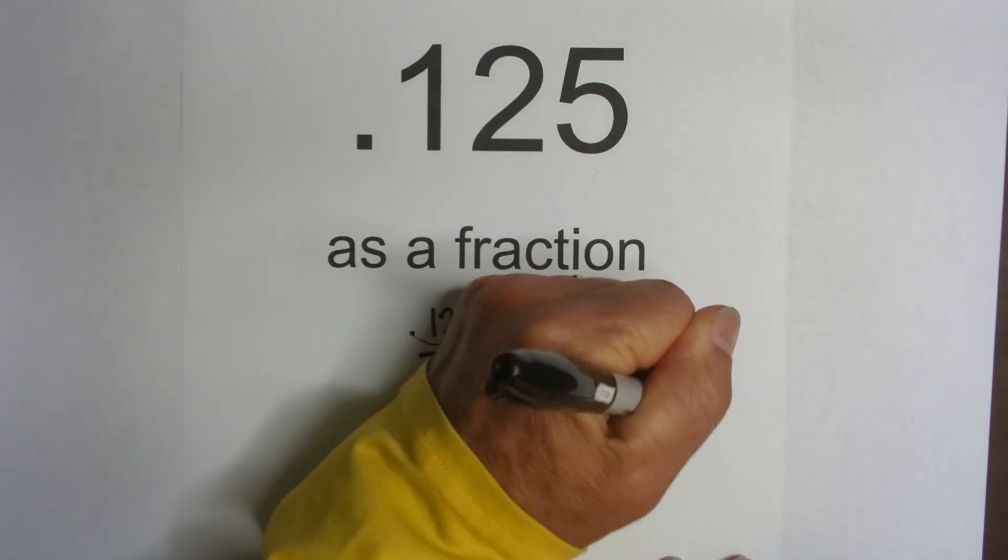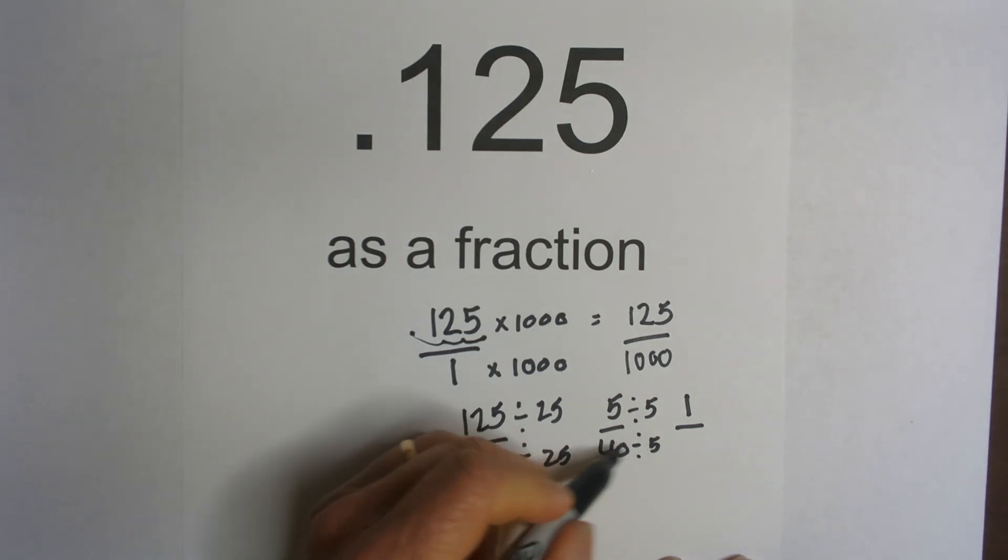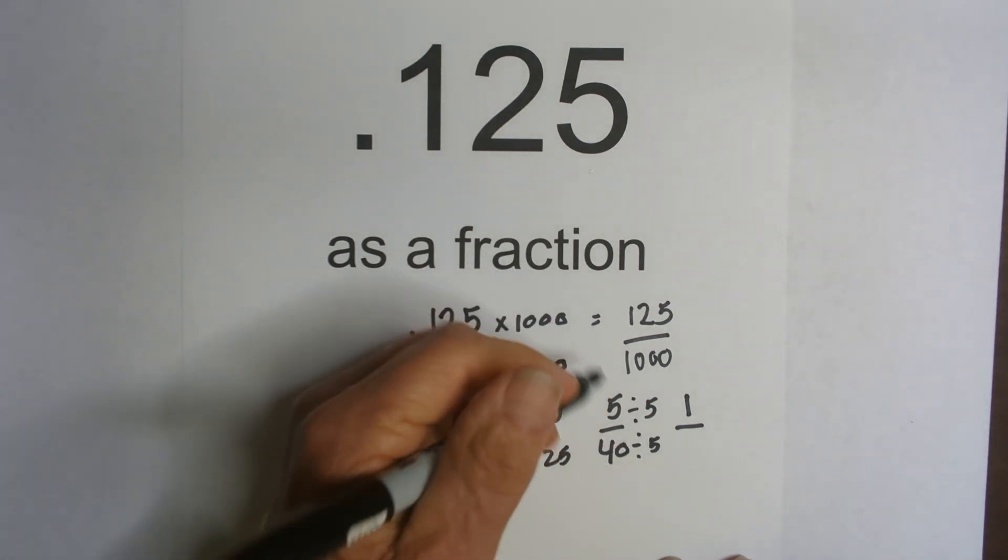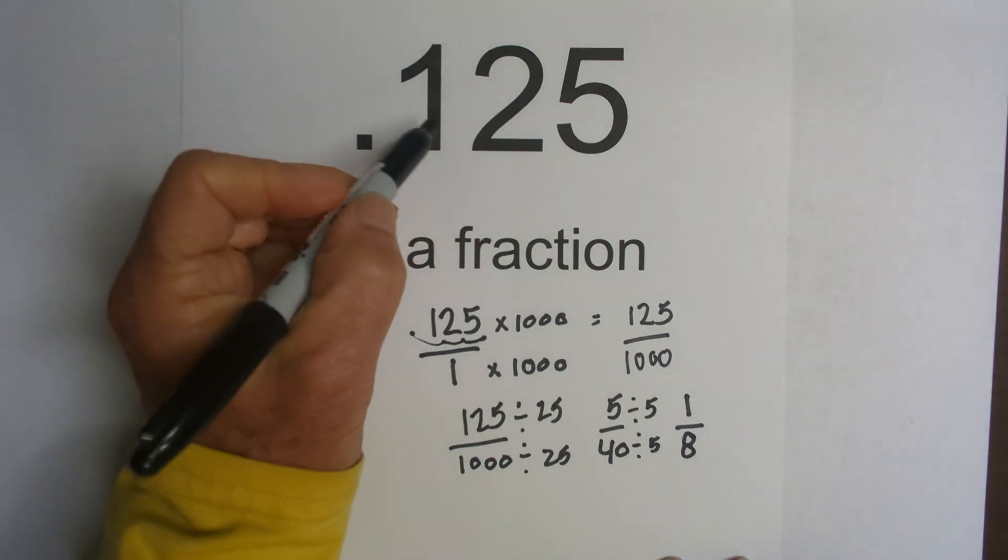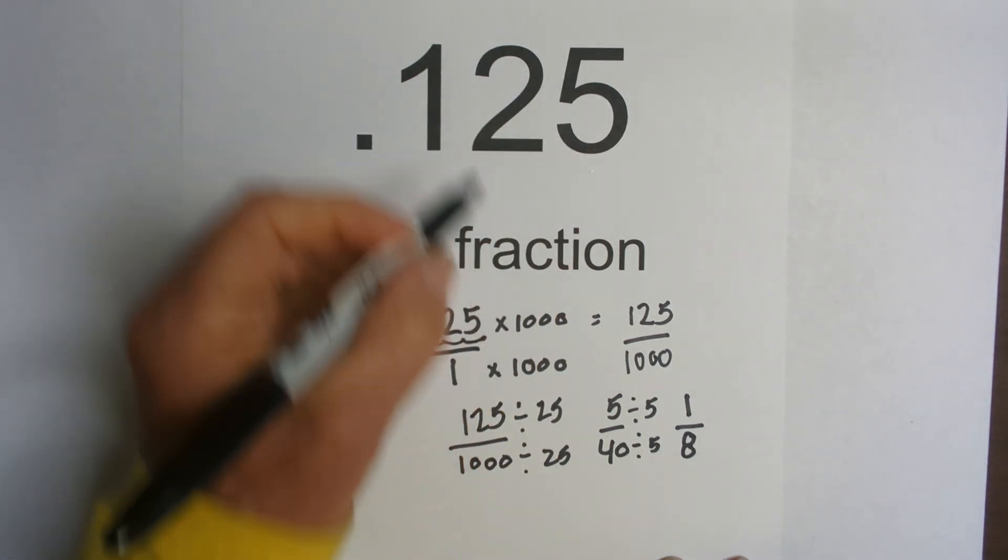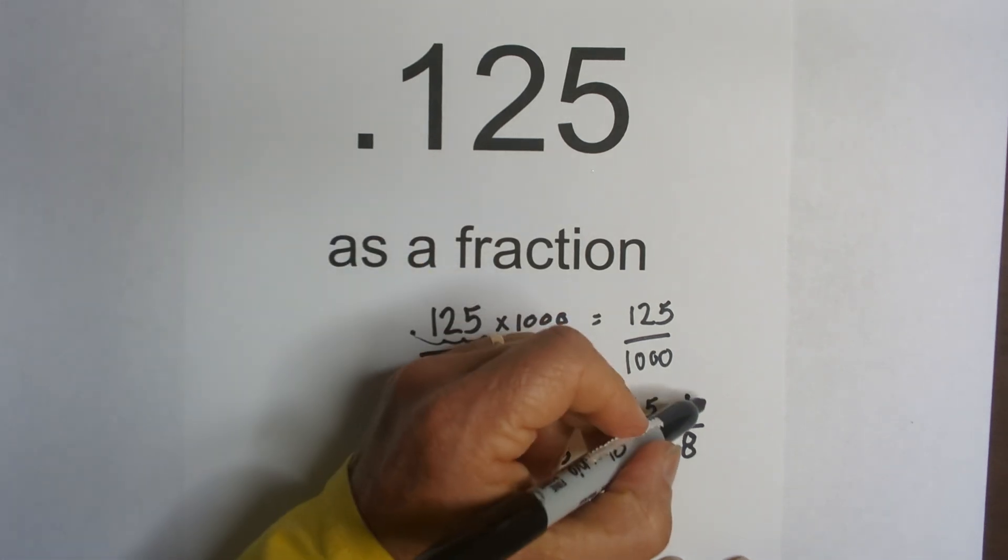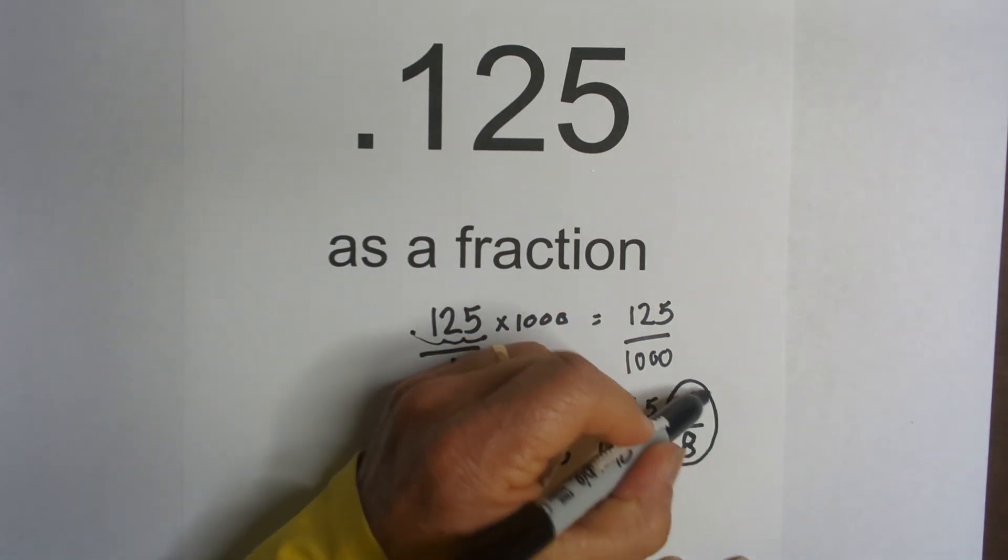5 divided by 5 is 1. And then 5 goes into 40, what is that? 8 times. So here we go. 125 thousandths reduced or converted to a fraction is 1 eighth.